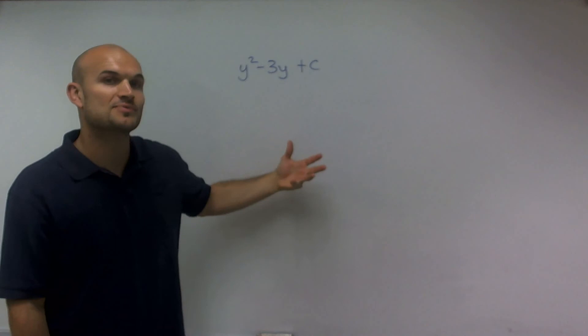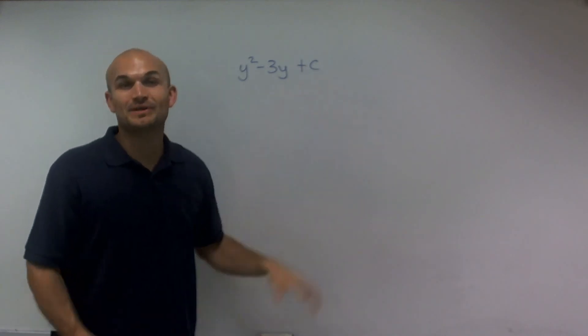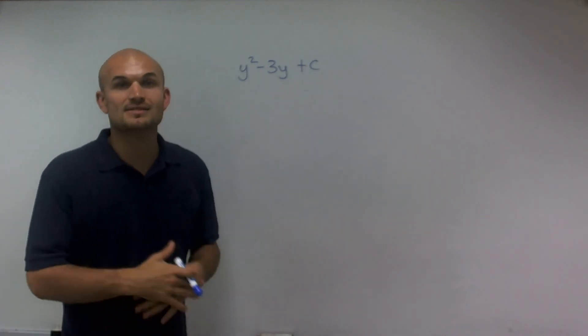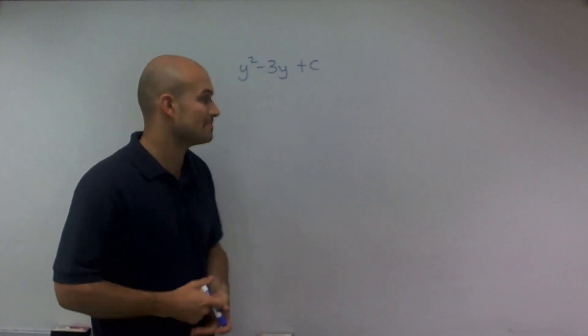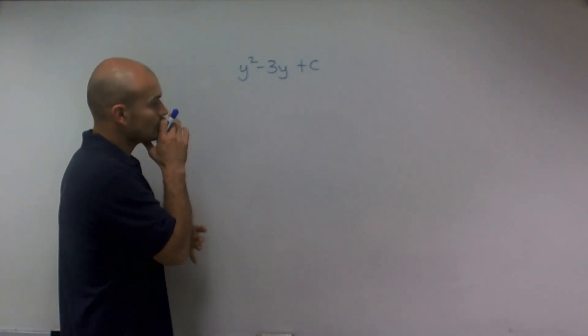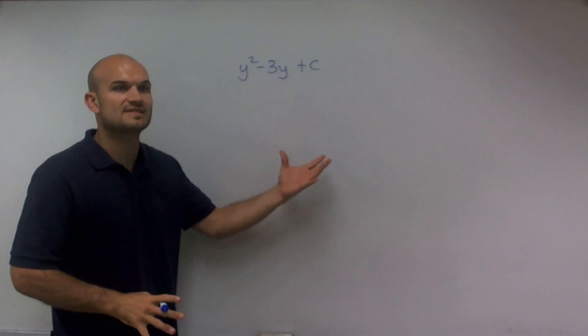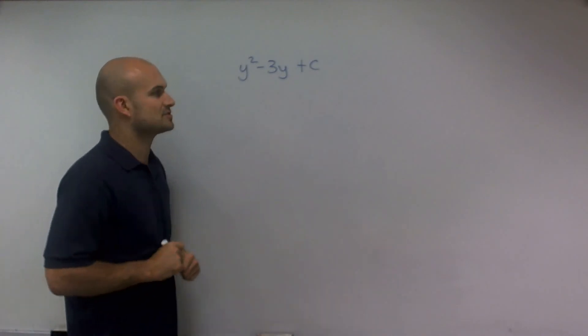What we're going to do is the process of completing the square. The process of completing the square has a lot of different applications in math. But what we want to do here is just find what is our value of c that is going to allow us to complete the square.